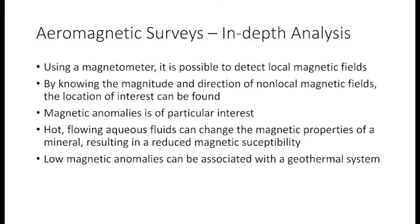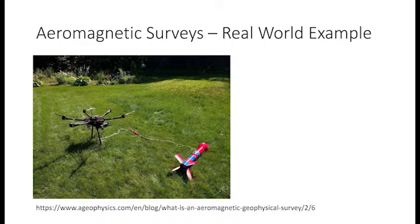For example, part of a region that you know contains iron compounds in its minerals, and then all of a sudden you have a lower magnetic region — that is probably associated with a hot fluid flowing through that area. Here's what aeromagnetic survey equipment might look like in the real world. This pink and slightly bluish striped rocket-type device is the magnetometer, attached to a drone that will fly over a region to detect local magnetic fields and find if the region has magnetic anomalies associated with geothermal fluid.